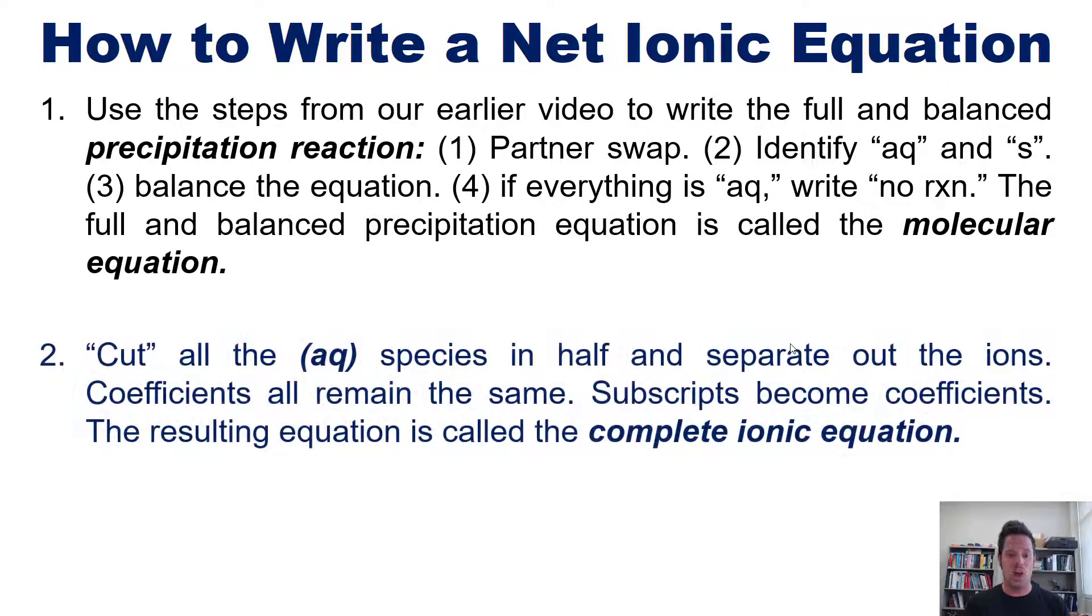Next, you cut all of the AQ species in half and separate out all the ions. In that process, coefficients all remain the same, but subscripts become coefficients. The resulting equation from this step is called the complete ionic equation.